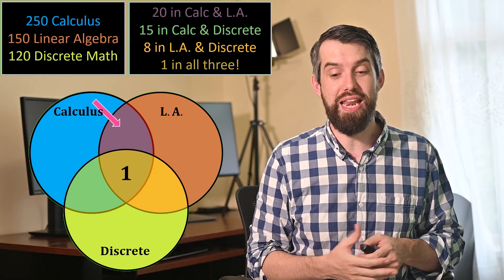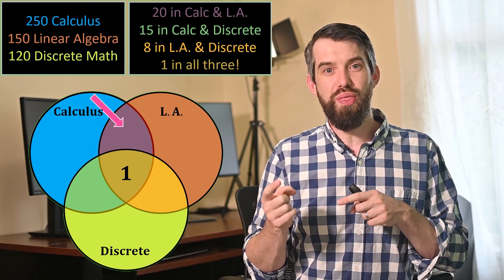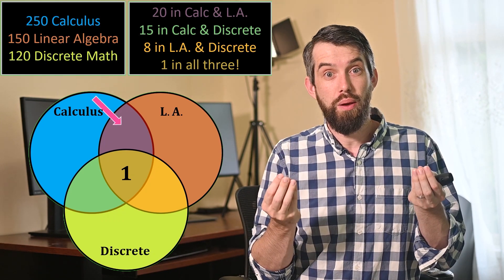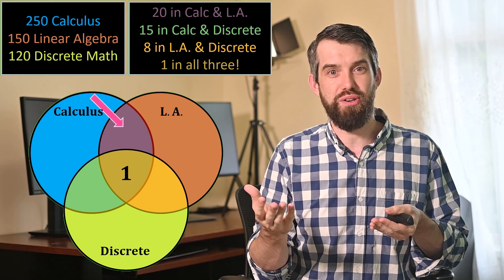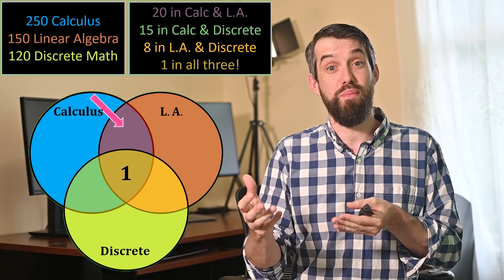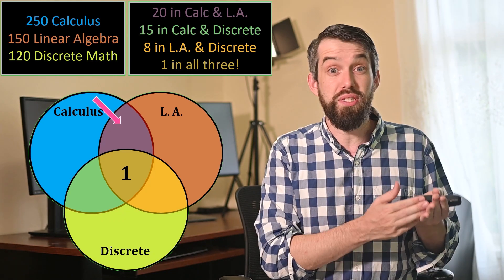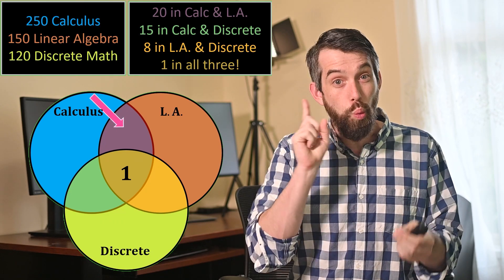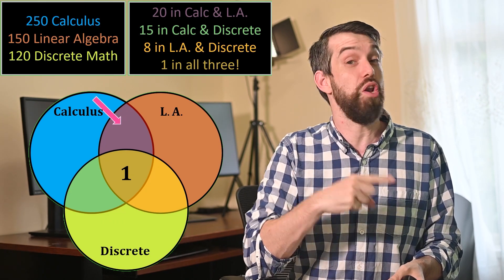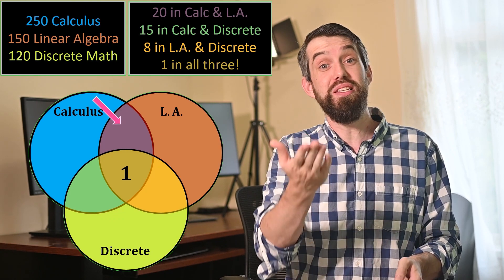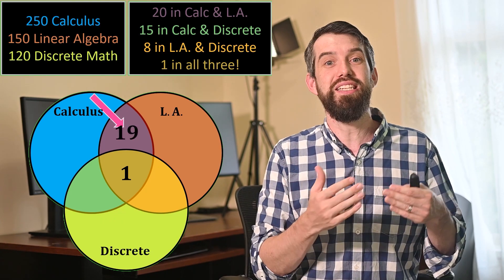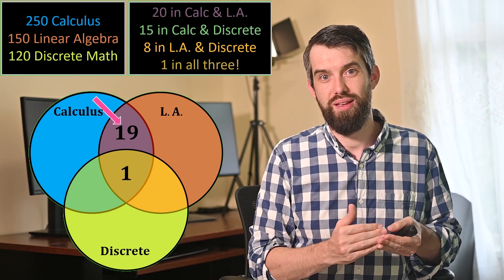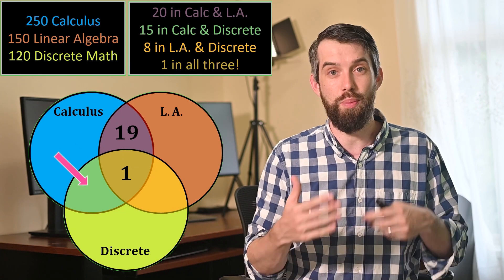The next region denotes students who are in calculus and linear algebra but not in discrete math. I know there are 20 students in calculus and linear algebra in general. However, one of them is already accounted for — one is in all three. So there are only 19 students remaining who are in calculus and linear algebra but not discrete math. Moving to the next double intersection: students in calculus and discrete math but not linear algebra — that's 15 minus 1, giving me 14.